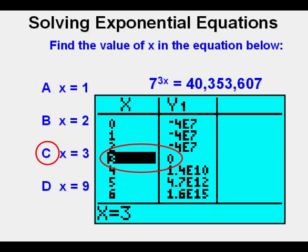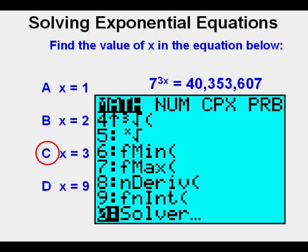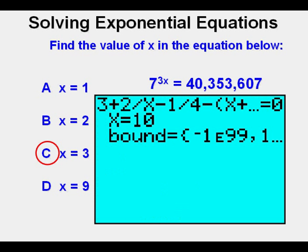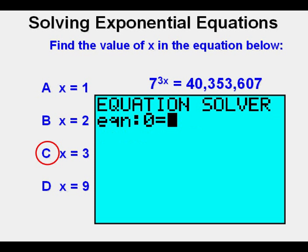We can verify by checking the table view by pressing 2nd then graph. Finally, we go to the equation solver by pressing the math key, then going down to 0 solver. Press enter. Clear the existing equation out of there by pressing the up arrow key. There will be a blinking cursor here just on the other side of the equal sign from 0. Then press the clear key. The equation is cleared out.